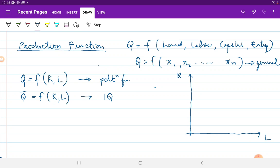In words, we had defined iso-quant as different combinations of factor inputs, capital and labor, which would yield the same level of output.